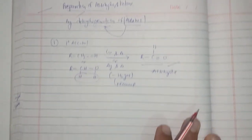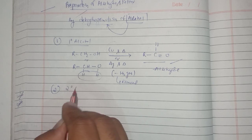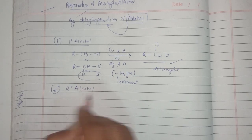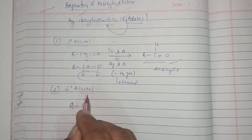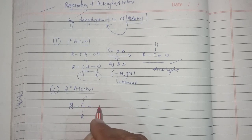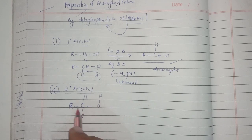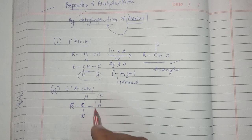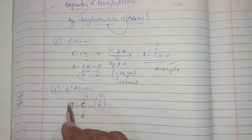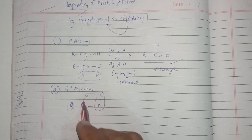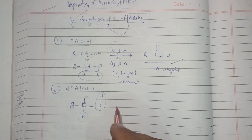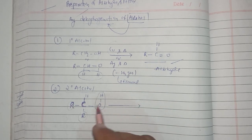Now let us see the two-degree alcohol. I am taking R-CH(R)-OH as the two-degree alcohol. The carbon which is attached to the alcoholic functional group OH has two alkyl groups attached to it, so we can say it is a two-degree alcohol. I have represented the open structure so that I can show how the hydrogen atoms are removed.